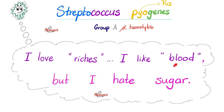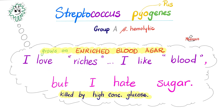I love riches and I like blood — that's why I grow on enriched blood agar — but I hate sugar. Put me in high concentration of glucose and I'll be killed. This is one of the reasons that ketchup, ranch, mayonnaise, and many other sauces have sugar in them — high concentration of sugar is a preservative; it kills bacteria. Salt is another preservative too, which is why almost all canned food contains sodium.